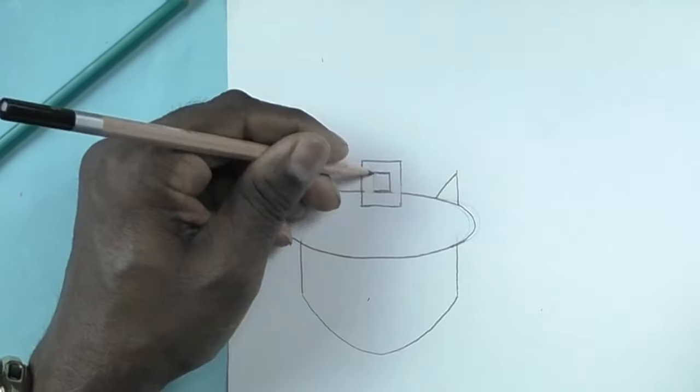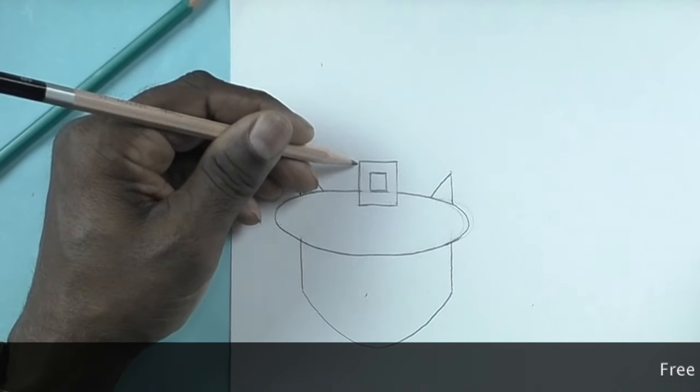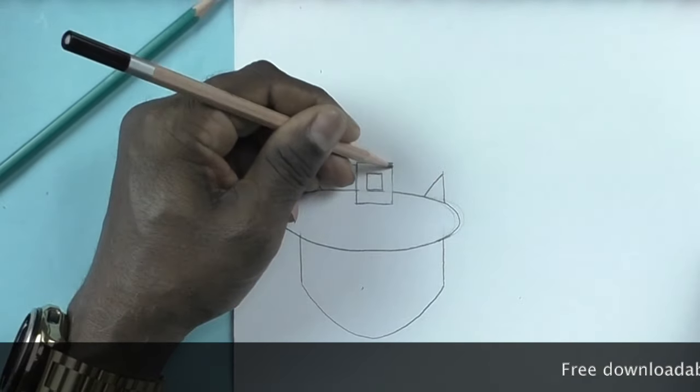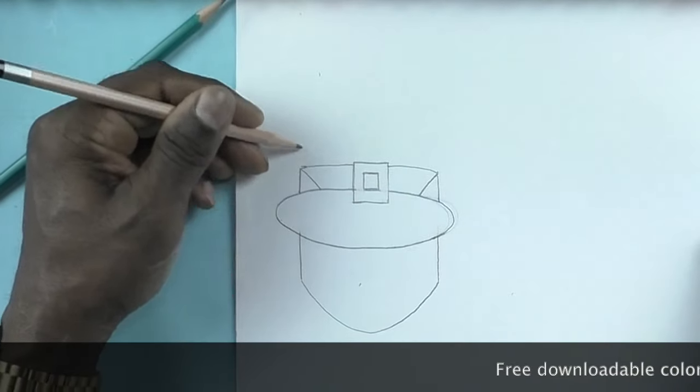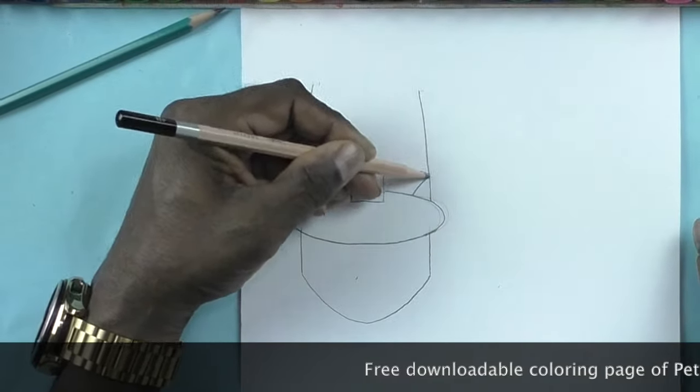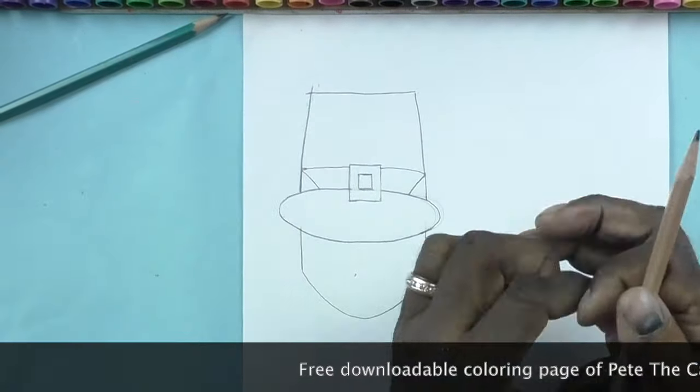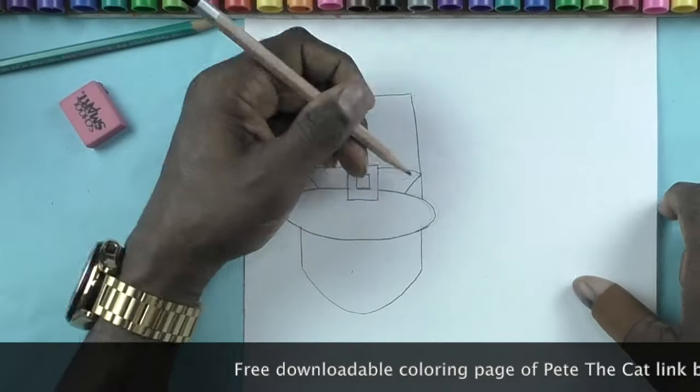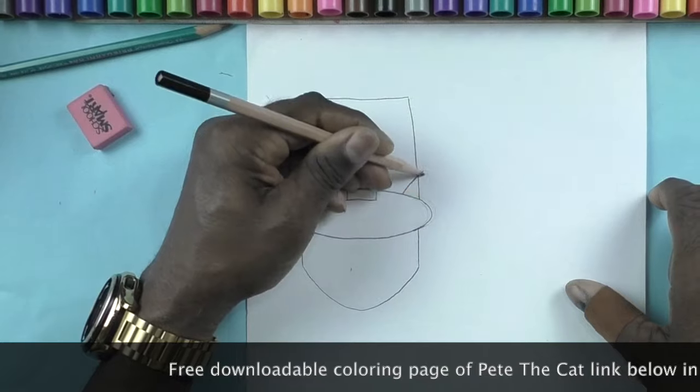And as you see, I always keep my eraser handy because you have to make corrections every now and then. I'm making the top of his pilgrim hat. It's almost like a square but it's more so like a rectangle.